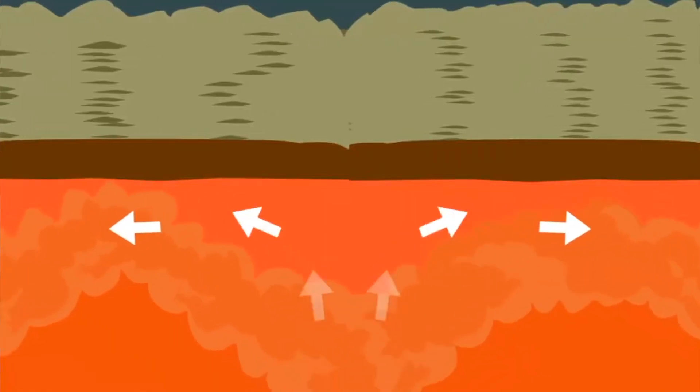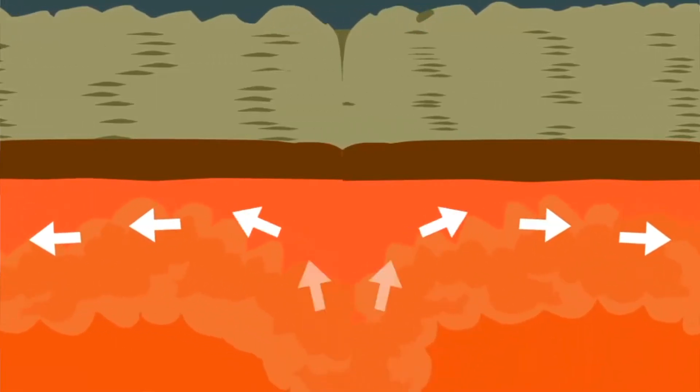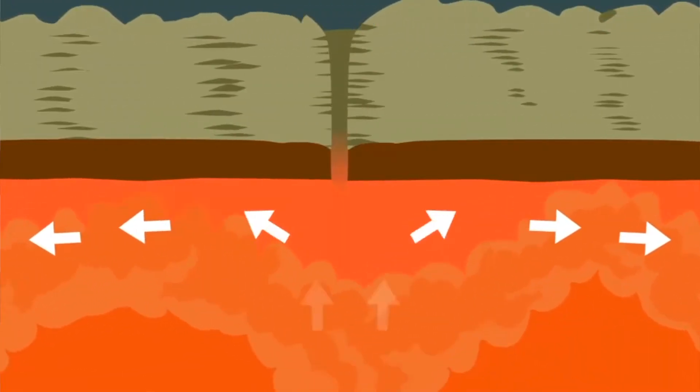We stated earlier that these plates move due to forces inside Earth's surface. These forces are called convection currents — a cycle of hot material rising and cool material sinking. Heat from the core causes magma to rise up and move along the boundary of the asthenosphere and the lithosphere. As magma begins to cool, it starts to sink towards the core. This cyclic movement can be compared to a chain hanging at the edge of a table and slowly beginning to slide.